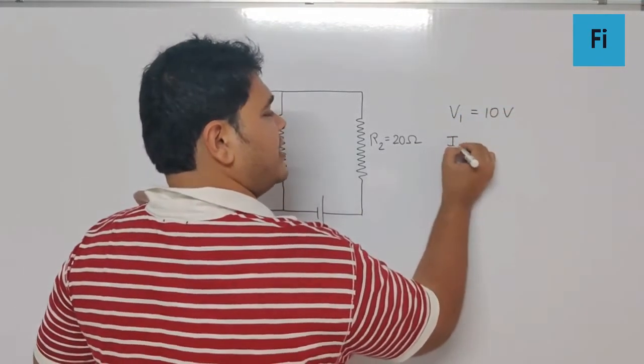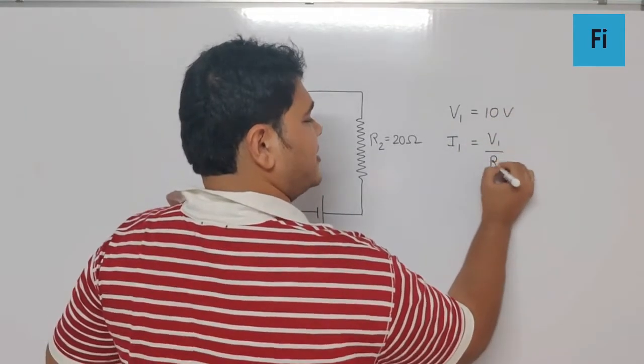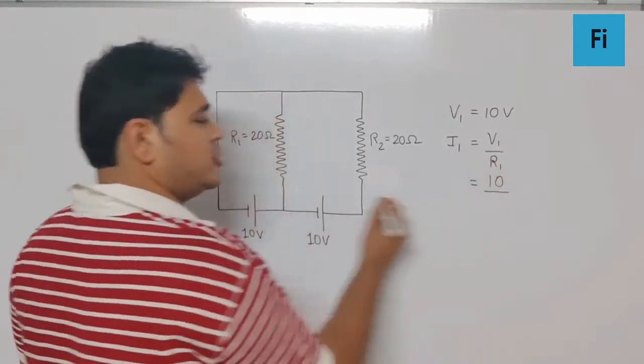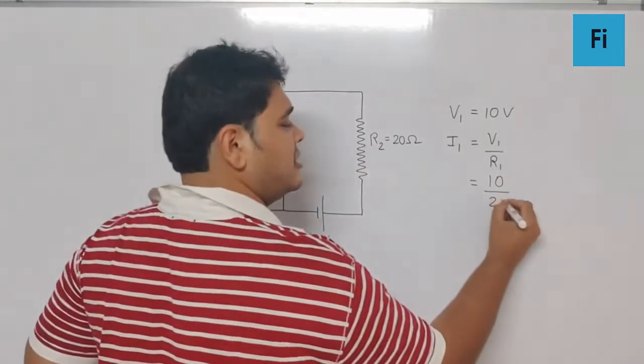And so I1 is V1 by R1, which is V1 as we know it's 10 upon R1 is 20, that gives us 0.5, and so that is the first part.